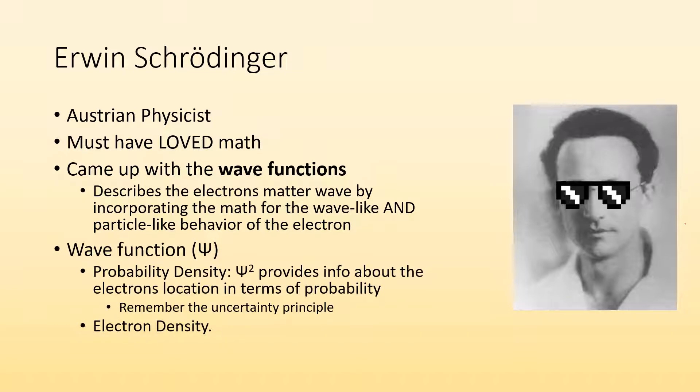We call these the wave function. So the wave function is this weird looking symbol. The probability density is that wave function squared and the probability density provides information about the electron's location in terms of probability. So if you remember the uncertainty principle, we can't know for sure where an electron is but using the probability densities we can describe where you're likely to find it.